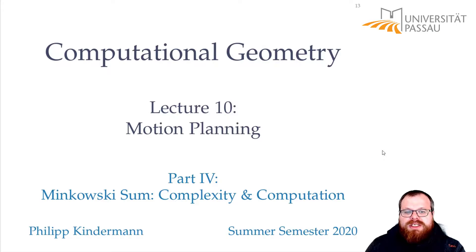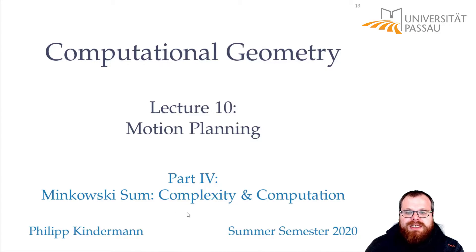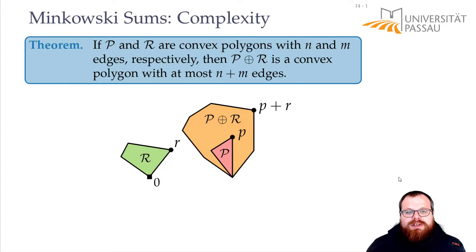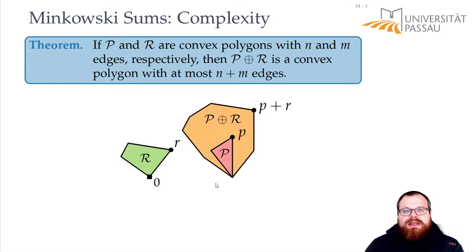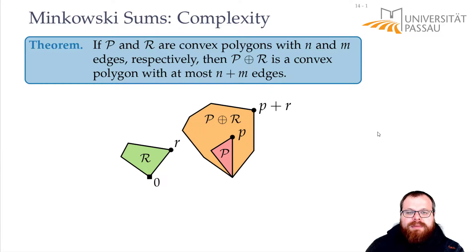We know that the configuration space is the same as the Minkowski sum between two objects. The question, however, is what is the complexity of the sum and how do we compute it? First, we talk about the complexity. If we have two convex polygons with n and m edges respectively, then the Minkowski sum between these polygons is again a convex polygon with at most n plus m edges. Why is this the case?